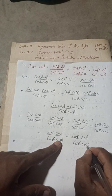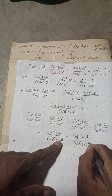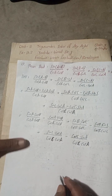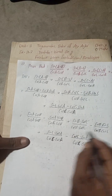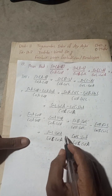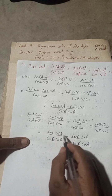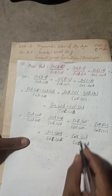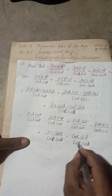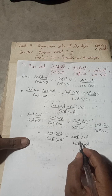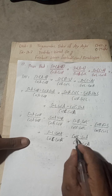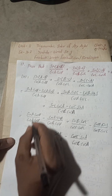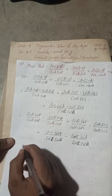Now with the corrected third term: cos C · cos A and cos C · cos A cancel correctly. After all cancellations, we have: sin A / cos A − sin B / cos B + sin B / cos B − sin C / cos C + sin C / cos C − sin A / cos A.